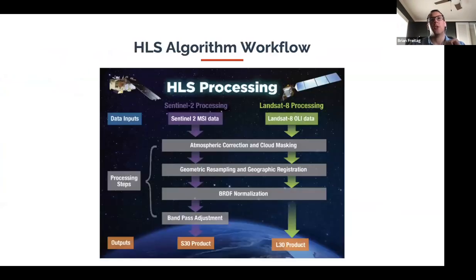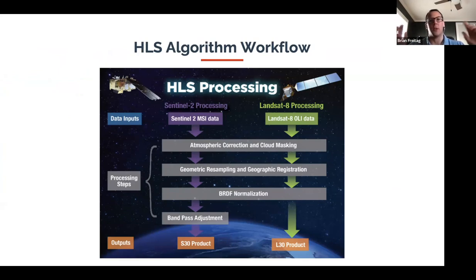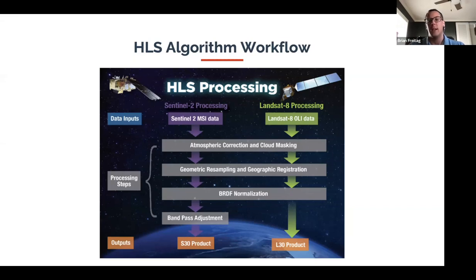To make this work, we have two different instruments providing input data — both needing atmospheric correction. They are both geometrically resampled to the analysis-ready grid we define. Then we do our BRDF normalization, and then the bandpass adjustment. The bandpass adjustment is essentially what we do to make the Sentinel-2 products look like the Landsat-8 products — a simple algorithm applied per band so that, for example, band 3 for the S30 product matches band 3 for the Landsat-8 product.